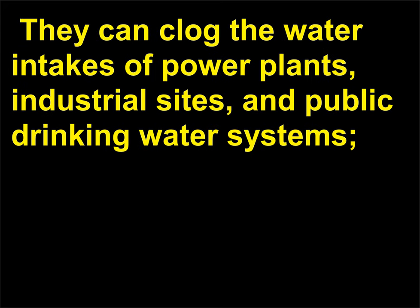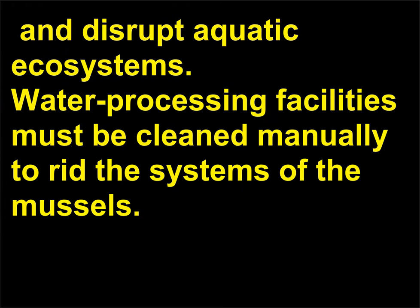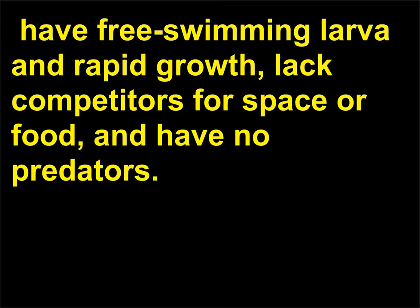They can clog the water intakes of power plants, industrial sites, and public drinking water systems; foul boat hulls and engine cooling water systems; and disrupt aquatic ecosystems. Water processing facilities must be cleaned manually to rid the systems of the mussels. Zebra mussels are a threat to surface water resources because they reproduce quickly, have free-swimming larvae and rapid growth, lack competitors for space or food, and have no predators.